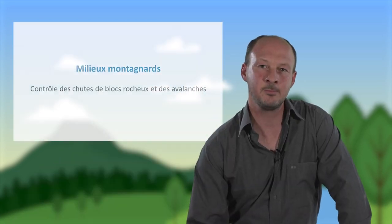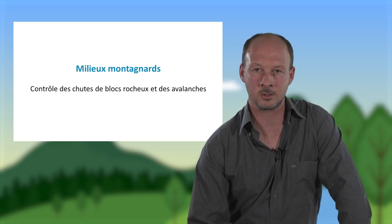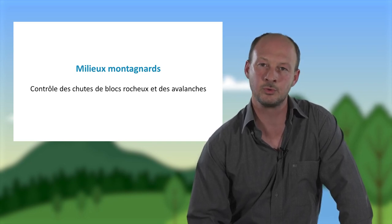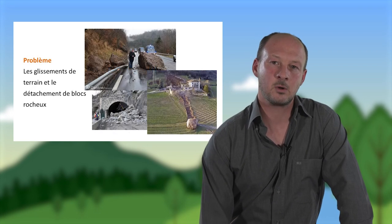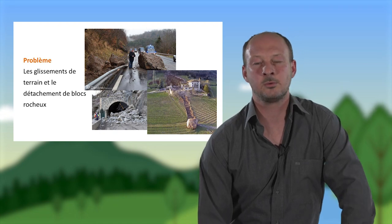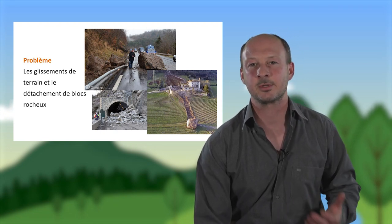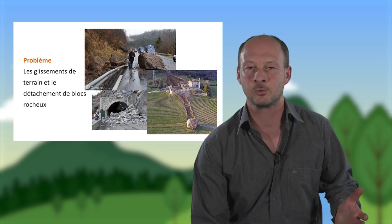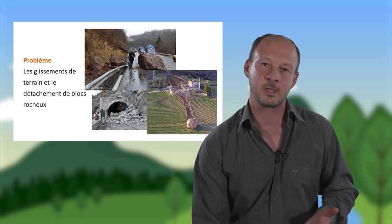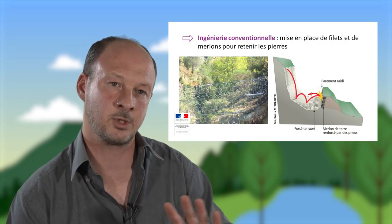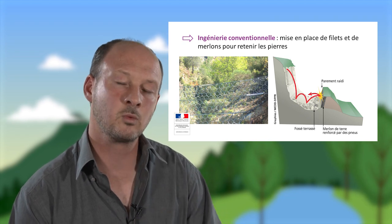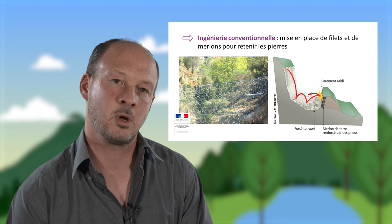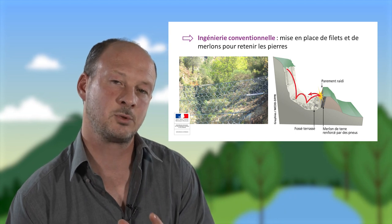Un deuxième exemple concerne les milieux montagnards, dans lesquels des ingénieurs sont confrontés à des problèmes de chute de blocs rocheux, de glissement de terrain et d'avalanches. Ces chutes de blocs produisent des dégâts considérables sur les infrastructures routières, coupant parfois des vallées du reste du monde, et dégradent également des habitations. Pour lutter contre ces chutes de blocs, on peut installer en ingénierie conventionnelle des filets pour retenir les pierres, ou des merlons équipés de pneus.